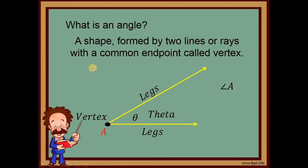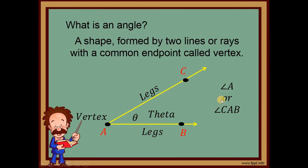But what if there are multiple angles at that vertex? We use three letters. So we can name it angle CAB or angle BAC. Make sure that when naming an angle with three letters, the vertex — in this case A — is always in the middle. Palaging nasa gitna yung vertex natin.